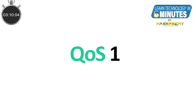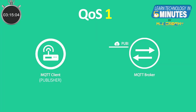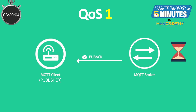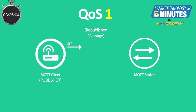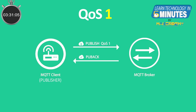Quality of service level 1: QoS 1 guarantees that a message is delivered at least one time to the broker. The publisher stores the message until it gets an acknowledgement packet within a predefined time interval. If the time interval expires, the publisher republishes the message again to the broker. It is possible for a message to be sent or delivered multiple times in QoS 1.